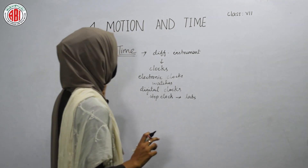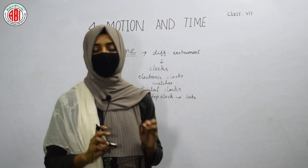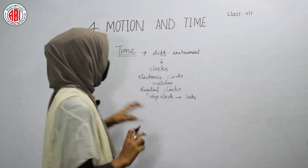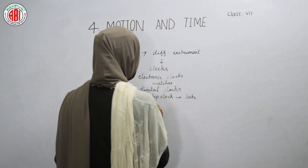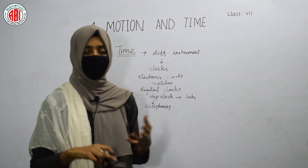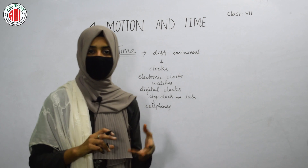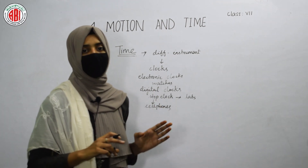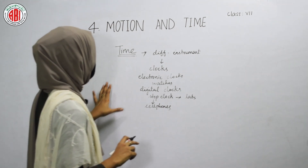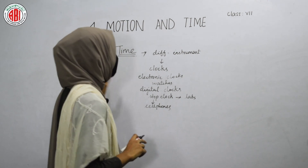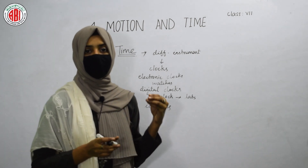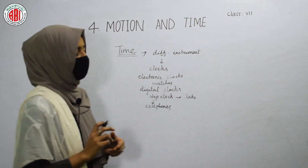The stop clock is also used in running races and swimming races to measure time accurately. Nowadays, the stop clock is also present in cell phones — when we open the stop clock option on a cell phone, we can easily calculate the time while doing a running race or a swimming race. This is how different instruments can be used to calculate time, and by calculating time, we can estimate which object is showing slow motion and which is showing fast motion.